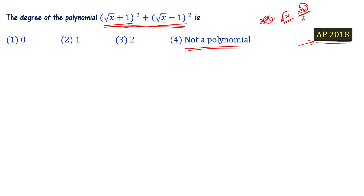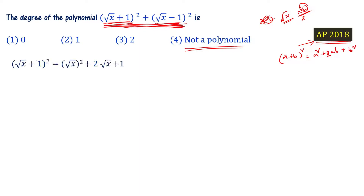Let's expand (√x + 1)² using the formula (a + b)² = a² + 2ab + b². So (√x + 1)² = (√x)² + 2·√x·1 + 1² = x + 2√x + 1.